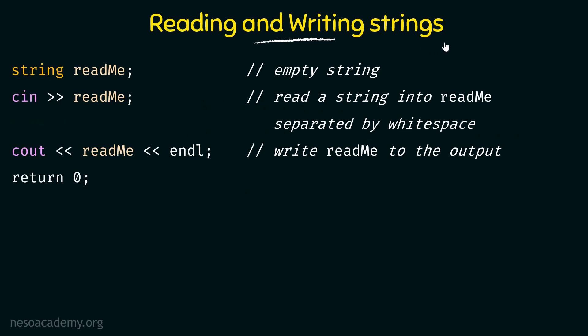The first method is reading and writing strings. We declare a string called readme, which is an empty string since nothing is assigned to it yet, and then we say cin >> readme. That means using the console input, we are getting a value from the user that will be stored inside this string called readme. This is a very important point: you are not going to be able to store any string with spaces using this method. Whenever a whitespace is encountered, everything after it would be discarded — only whatever is entered before the whitespace would be stored in readme.